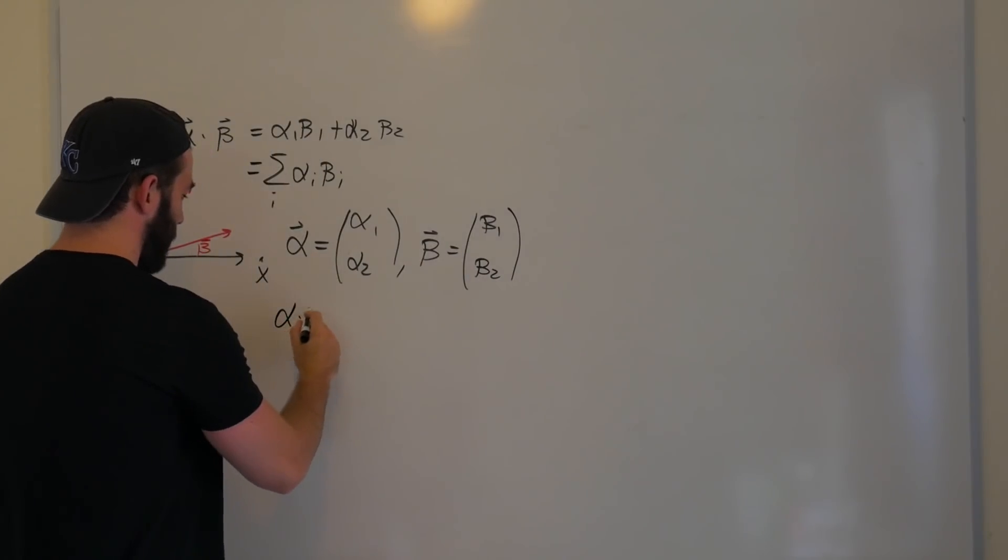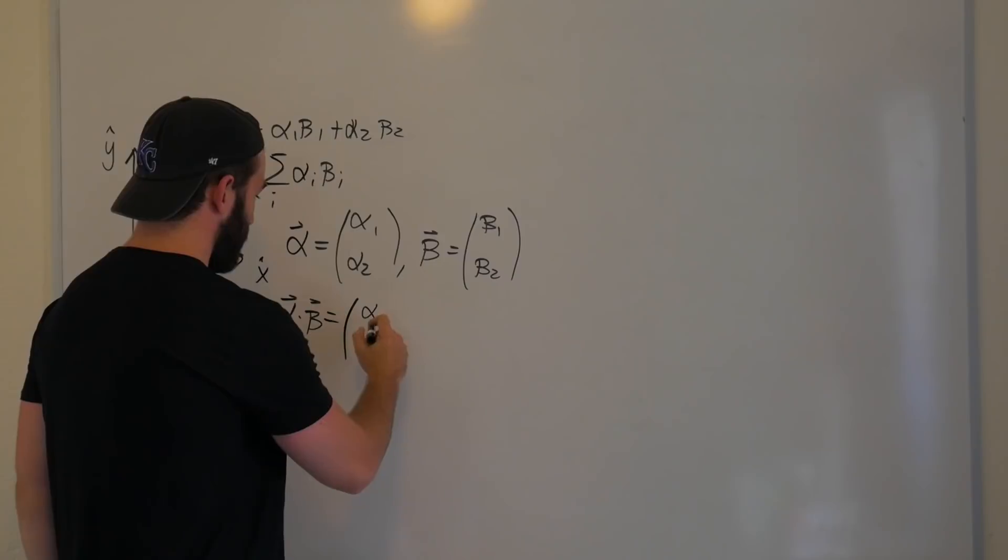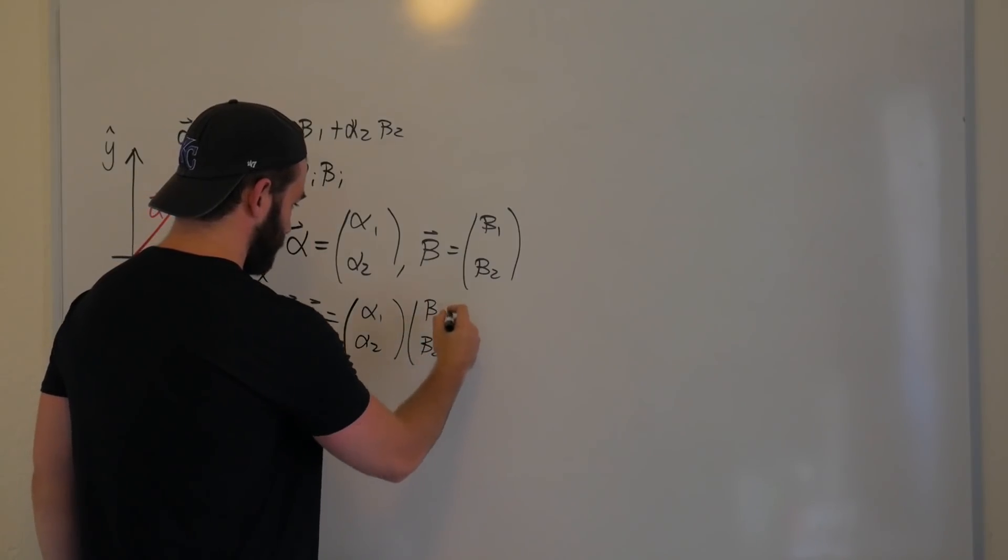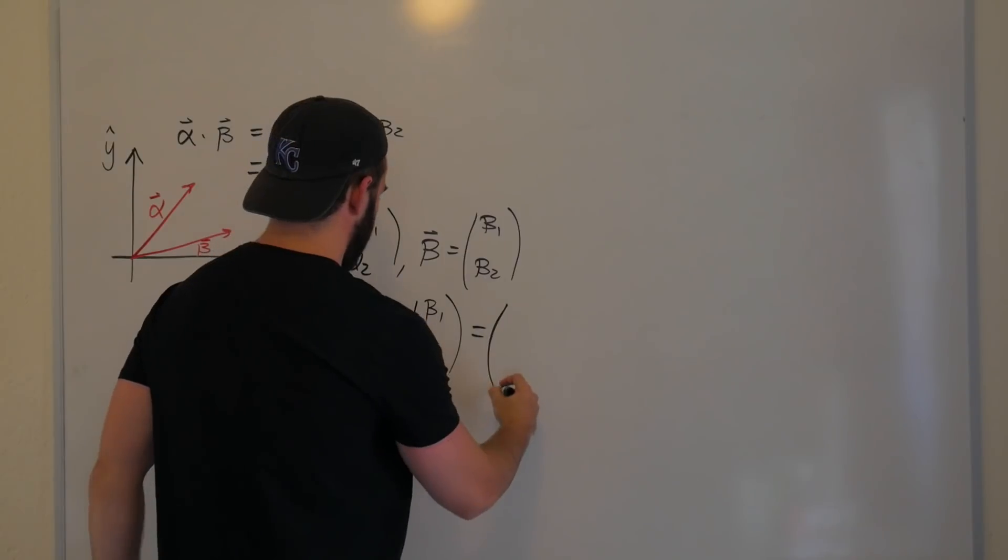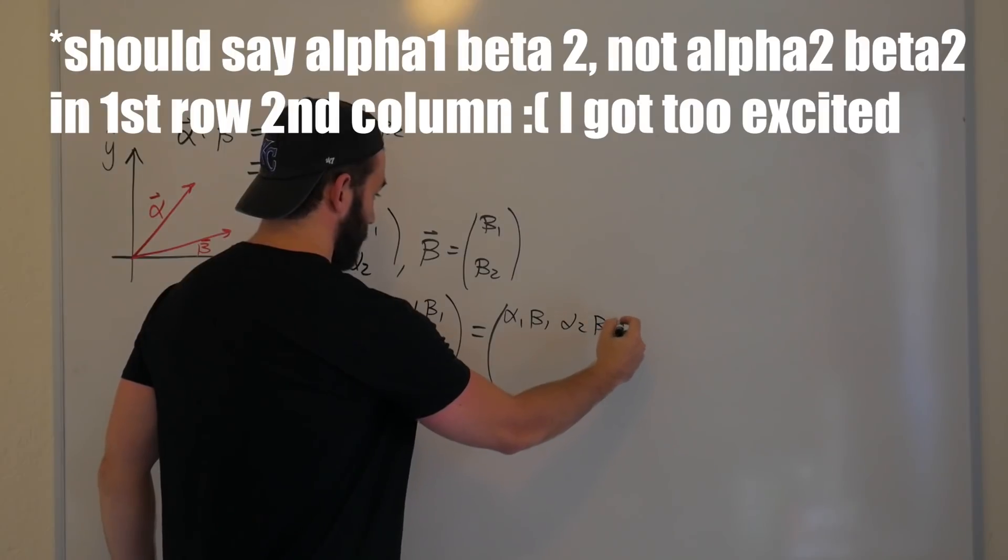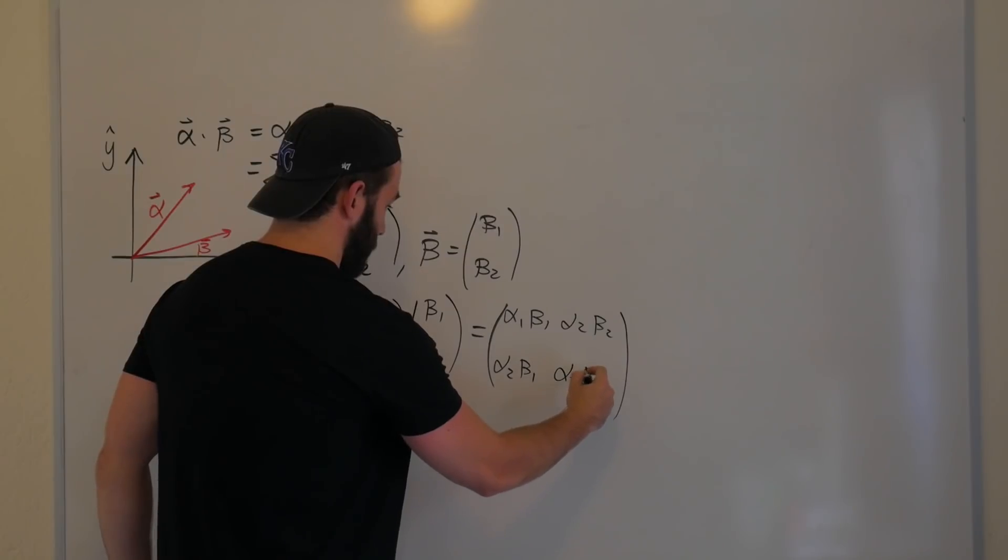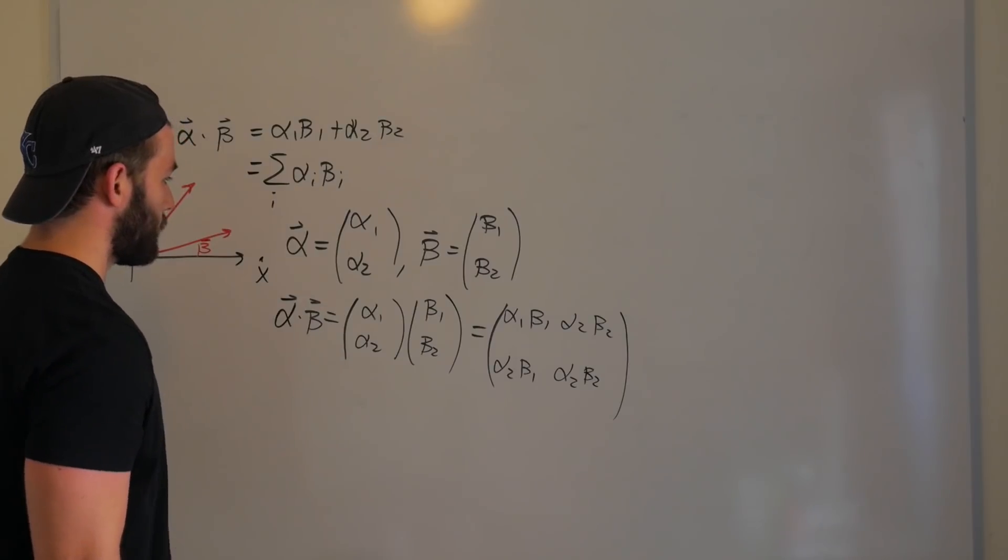Now how does alpha dot beta change? We can approach this in a naive way and just take the two column vectors and see what happens when we do matrix multiplication. Okay, beta_2. But when we do this, we're going to get a square matrix now. So this is going to be alpha_1 beta_1, alpha_2 beta_2, alpha_2 beta_1, alpha_2 beta_2. So we're going the wrong way.